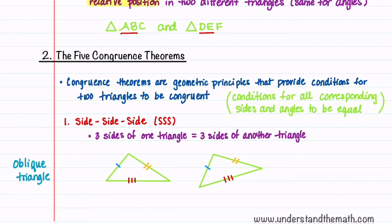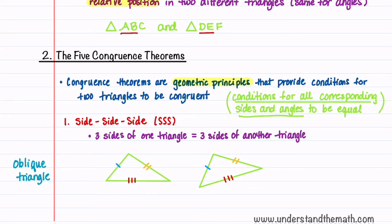Let's now dive into the five ways two triangles can be congruent. Congruence theorems are geometric principles that provide conditions for two triangles to be congruent. In other words, all they do is provide the conditions for all the corresponding sides and angles to be equal.